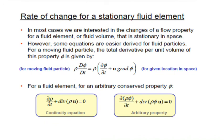Next, rate of change for a stationary fluid element. In most cases, we change a flow property for a fluid element that is stationary in space, so that some equations are easier derived for fluid particles. For a moving fluid particle, the total derivative per unit volume of property φ is: ρ Dφ/Dt = ρ(∂φ/∂t + u·∇φ). For a fluid element, for an arbitrary conserved property φ, the equation is: ∂(ρφ)/∂t + ∇·(ρφu) = 0.